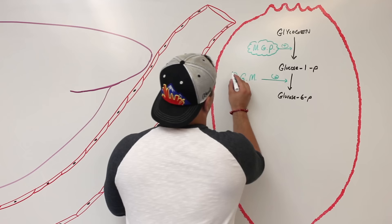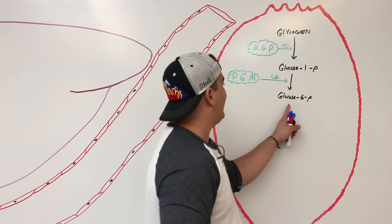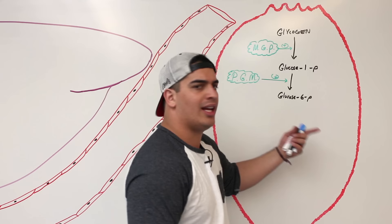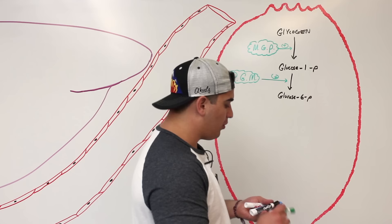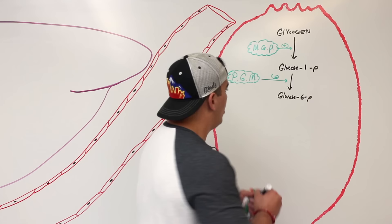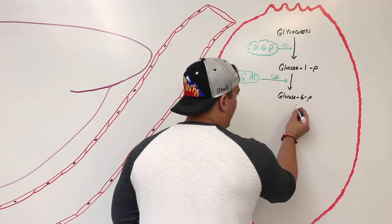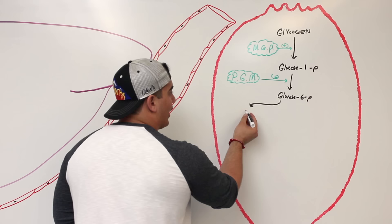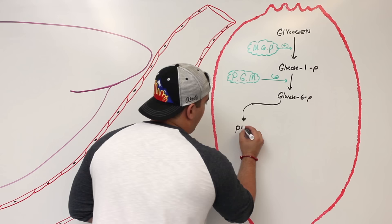This glucose-6-phosphate can't get out of the cell because skeletal muscle doesn't have the enzyme glucose-6-phosphatase, which is located in the endoplasmic reticulum. There's no such enzyme in the muscles, so we have to disguise that glucose in a different form. This is where we branch into the Cori cycle. Glucose-6-phosphate can undergo glycolysis.